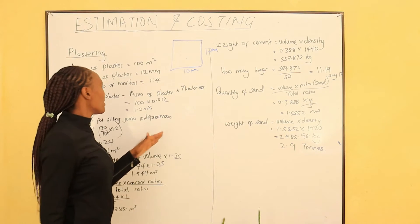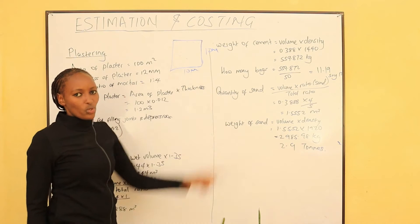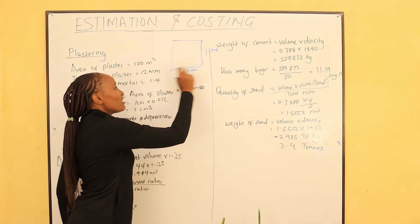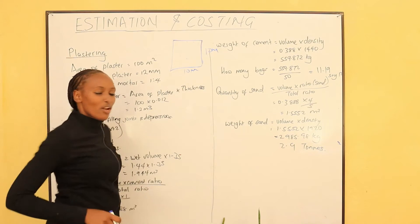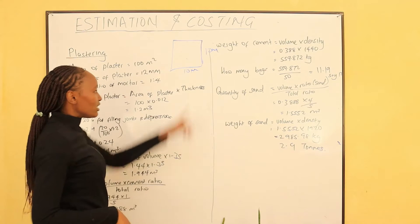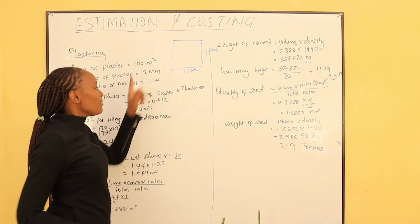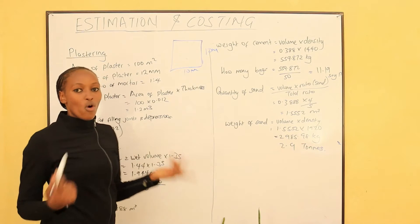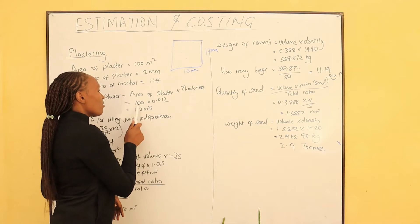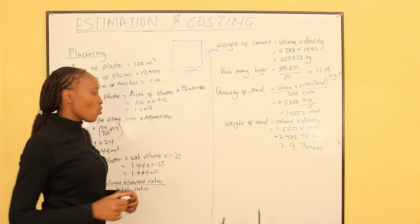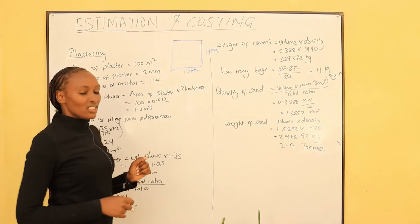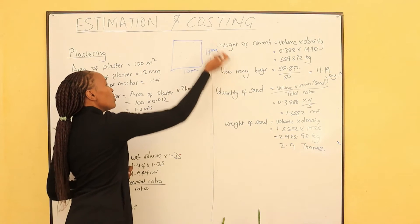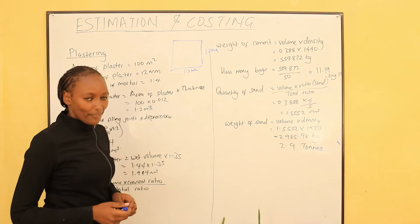How do we calculate the volume of plaster in this wall? Volume is equal to area times the thickness. The area here is 10 times 10, times the thickness of 12 millimeters. This is in meters — 12 millimeters will be equal to 0.012 meters. So what is the volume of plaster? The volume of plaster will be 100 times 0.012, and we shall get 1.2 meter cubed. So the total volume of plaster we shall use on this wall shall be 1.2 meter cubed.